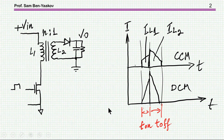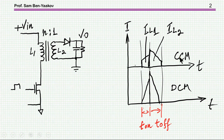So what is a flyback converter? In a flyback converter we have a coupled inductor, sometimes called a transformer — but it's not a transformer, it's a coupled inductor. We have a switch. We turn on the switch and then energy is stored in the inductor, and then when the switch is off, energy is released to the output. There are two ways of operating the flyback converter. One is CCM, in which the energy never goes down to zero within the core, so we always see current either in the primary or the secondary.